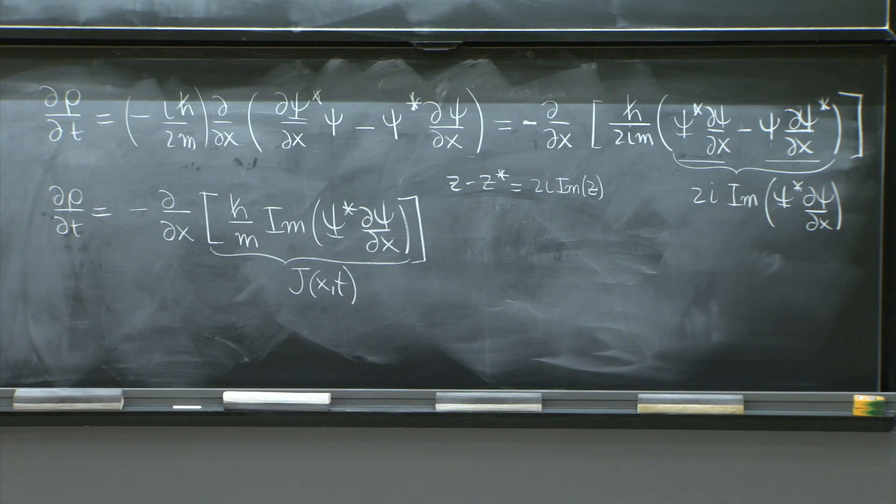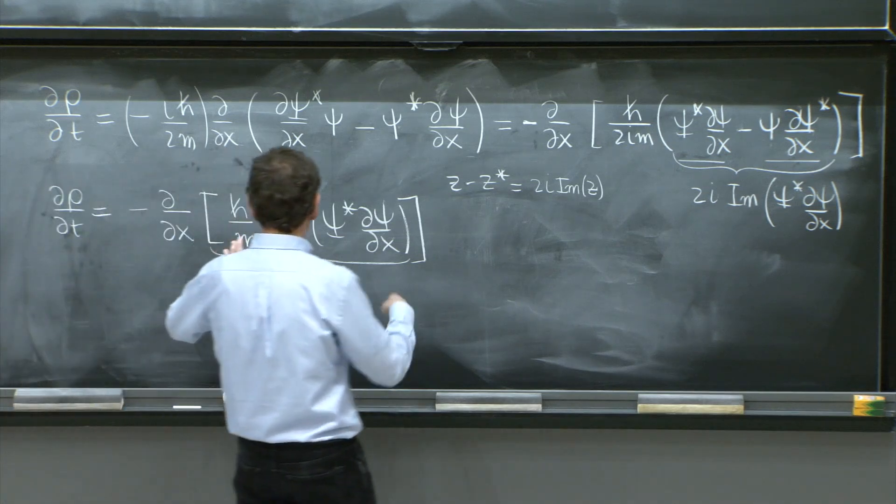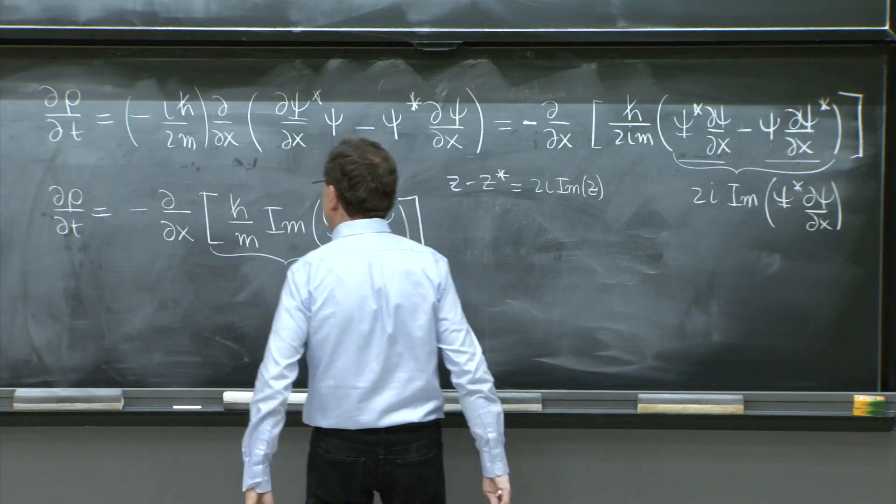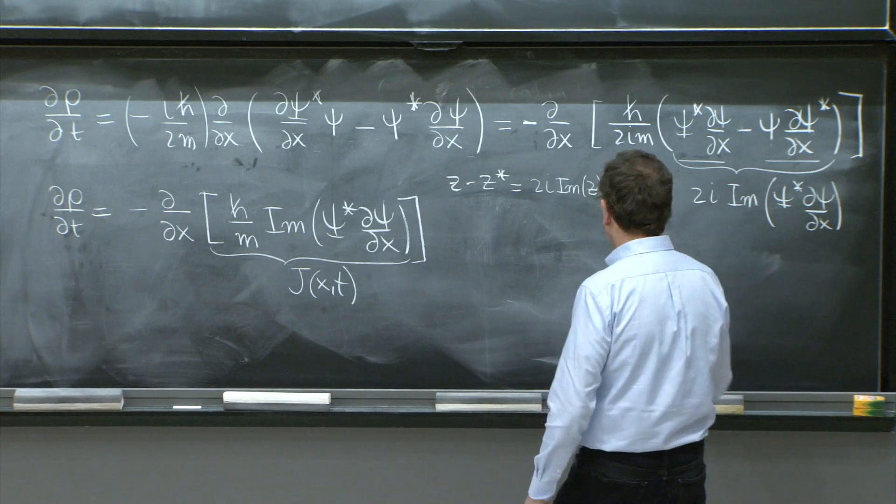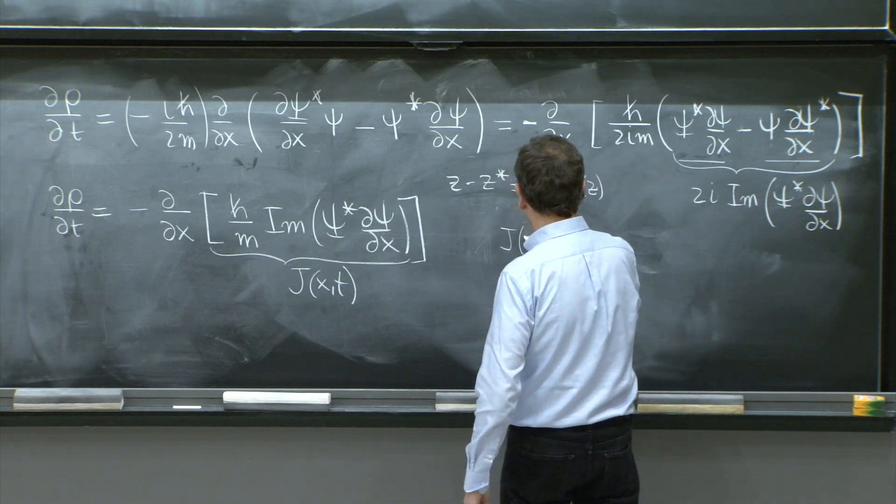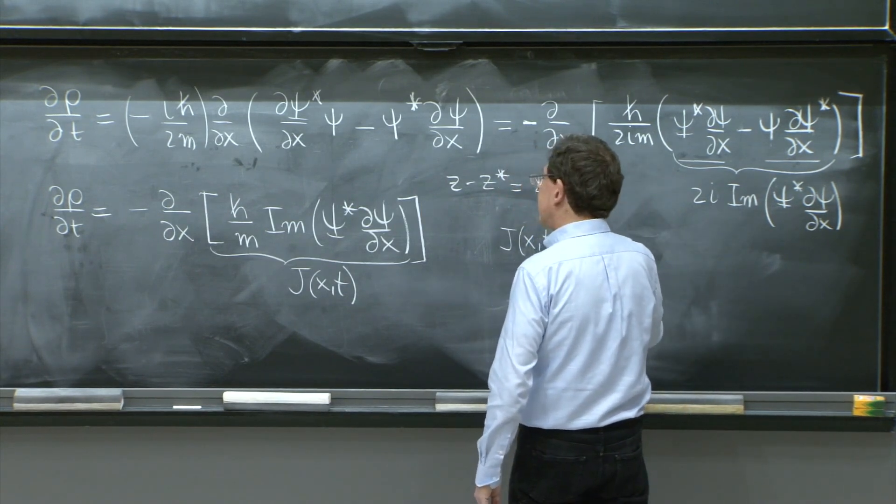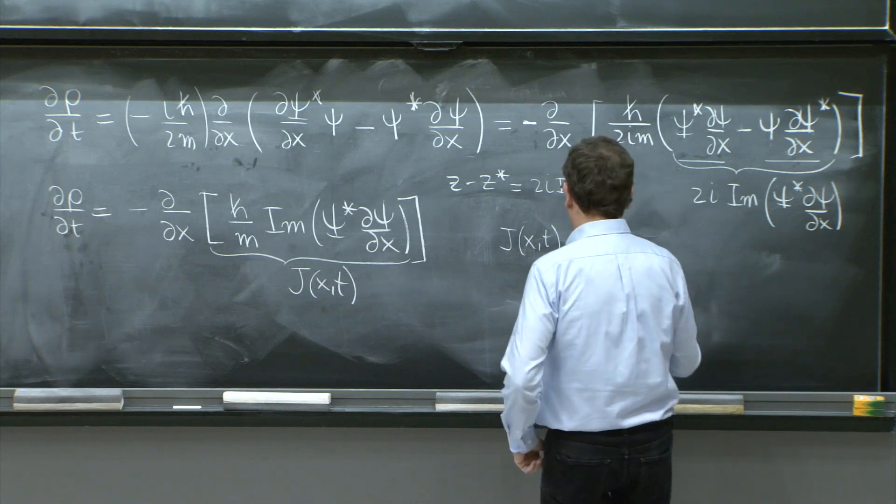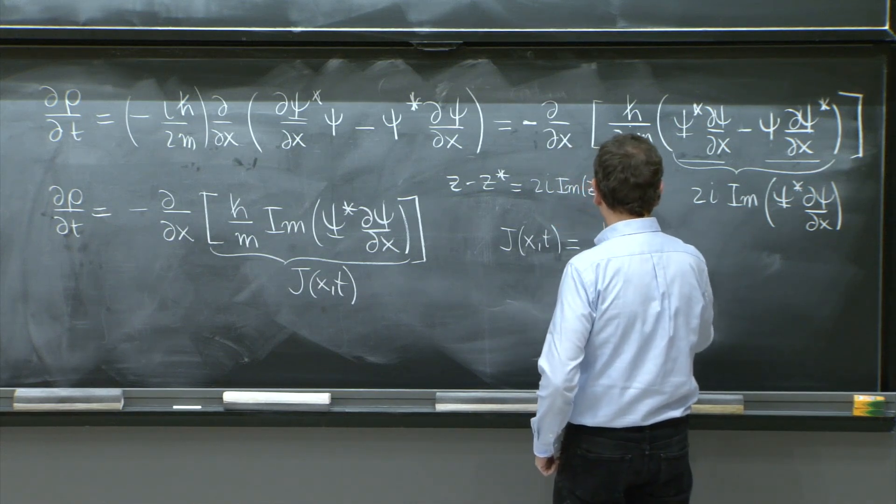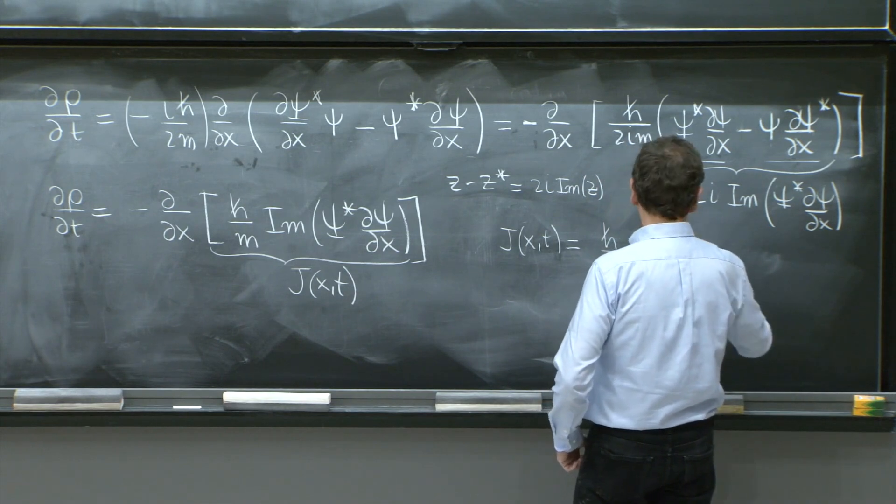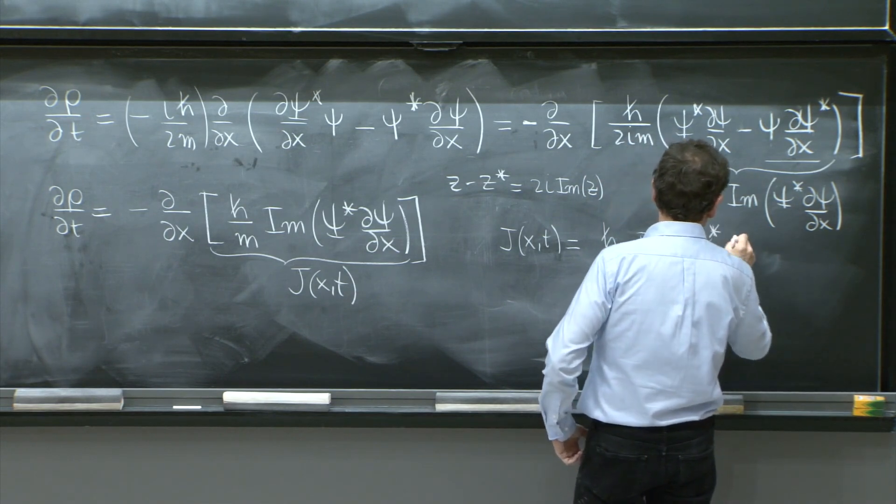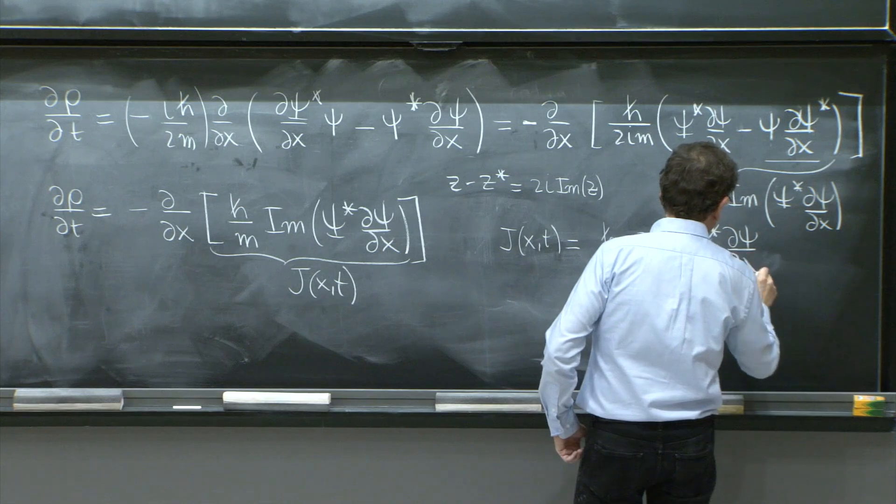So the current density, you say, why the current density, we'll see in a minute. But let's write it here, because it'll be very important. J of x and t is h bar over m imaginary part of psi star d psi/dx.